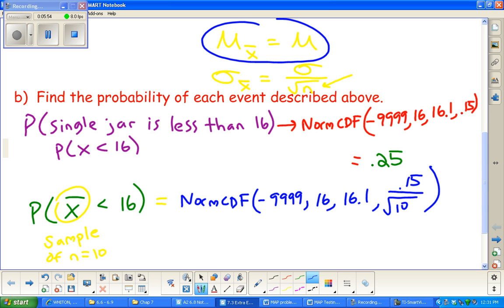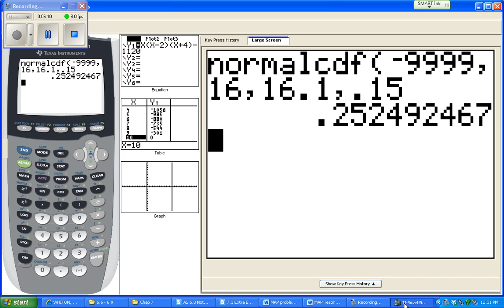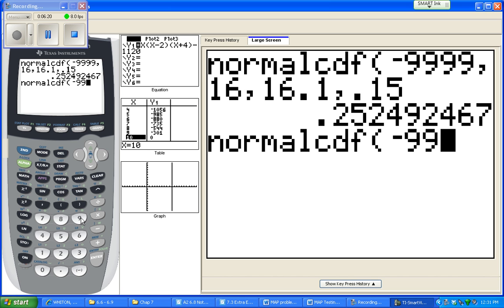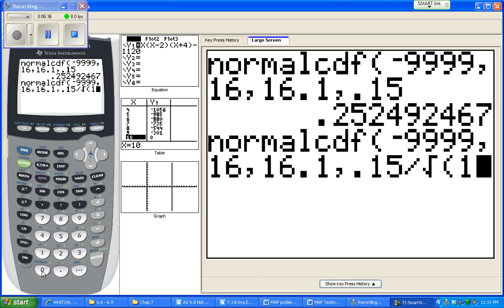So let's calculate that real quick. It looks like we're going to do - again, it's second distribution - I'm just going to retype the whole thing here from negative 9999 up through 16, the mean again is still 16.1, and we're just going to take our original standard deviation divided by the square root of the sample size.